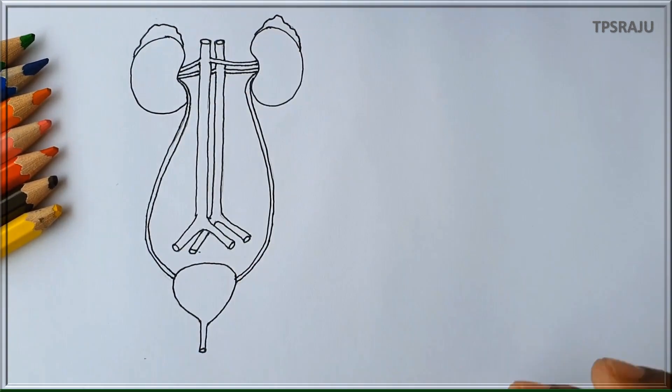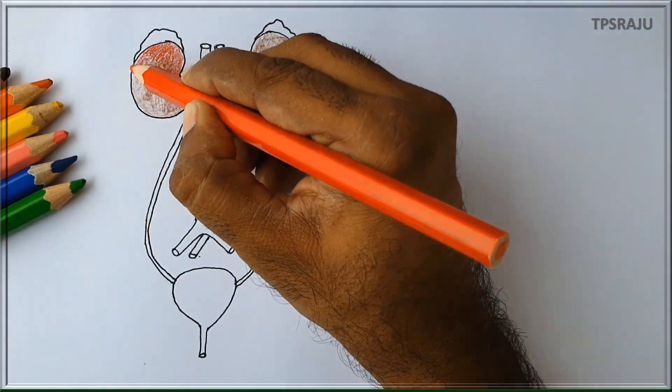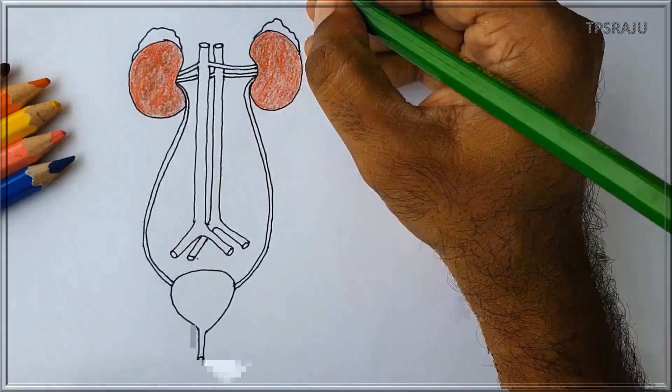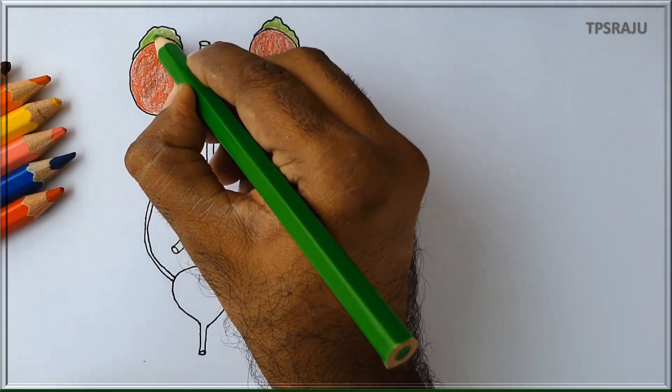If we apply the colors it will become more beautiful. Let us apply the colors. Applying brownish red color to kidneys. Green color to adrenal glands.